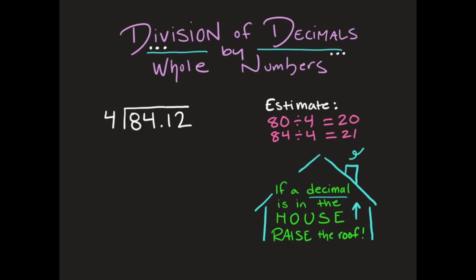Let's go ahead and do our division problem. Here's something to remember throughout our whole lesson: if a decimal is in the house — and we're going to treat this division bracket as our house — if the decimal is inside the house, you have to raise the roof. You take that decimal point and the first thing you do is move it straight up into your answer. If a decimal is in the house, raise the roof.